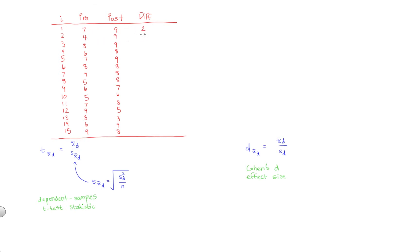So first we had 9 minus 7 is 2. Now we have 9 minus 4 is 5. 9 minus 8 is positive 1. 8 minus 6 is 2. 9 minus 7, 2. 8 minus 8, 0. 8 minus 9, negative 1. So notice this person actually decreased in how happy they were after getting that free cup of coffee. 8 minus 5 is positive 3. 7 minus 6 is 1. 6 minus 5, 1. 8 minus 7, another 1. 5 minus 9. This person became significantly less happy after getting that free cup of coffee. Kind of rare. 3 minus 3 is going to be 0. No change in how happy this person was. 9 minus 6 is going to be positive 3. And then last but not least, 8 minus 9 is negative 1.